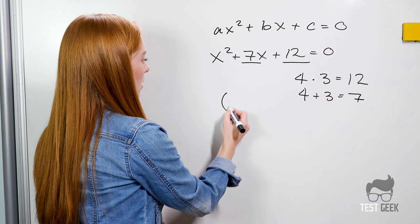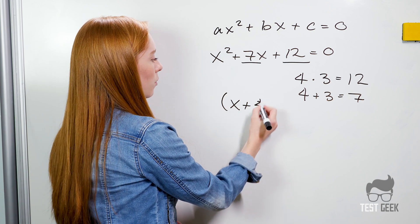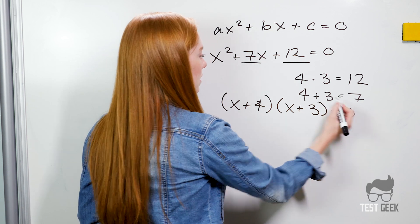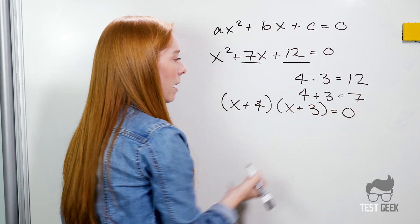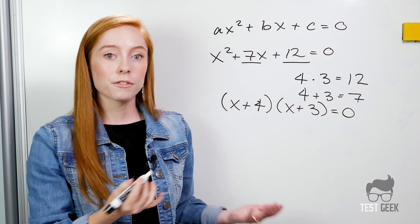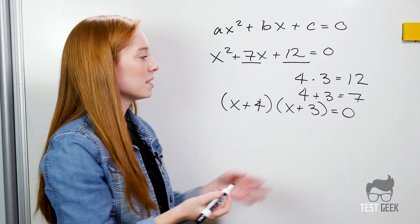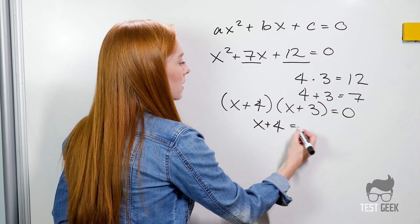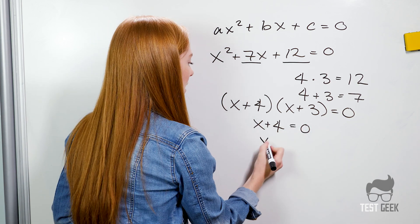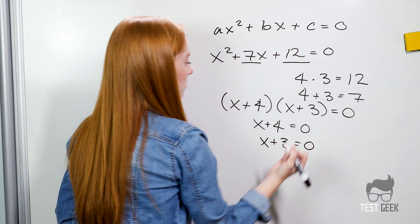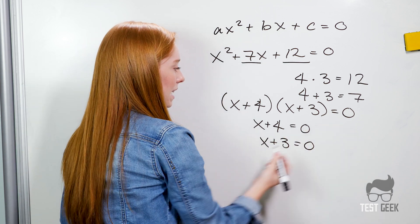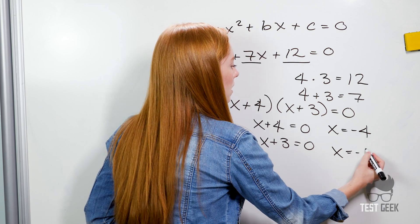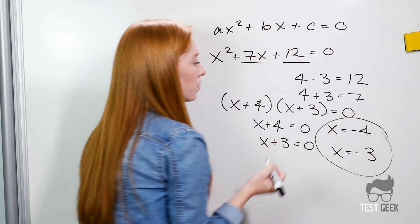So we can factor this by doing x plus 4 times x plus 3 and that equals zero. We sometimes forget about that zero but really when we're factoring we're still setting it equal to zero. So when we find our solutions we can say x plus 4 equals 0 and x plus 3 equals 0. We solve for x and get x equals negative 4 and x equals negative 3. So those are our two solutions.